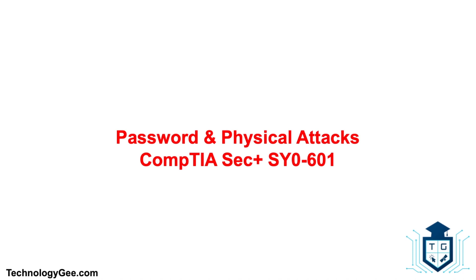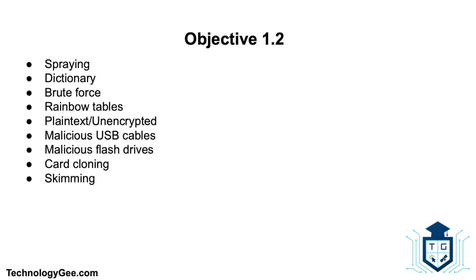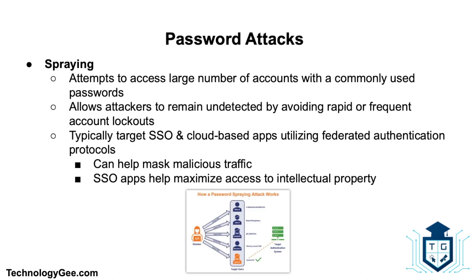What's up everybody, this is your boy Tech G, back with another video to help you successfully pass the CompTIA Security Plus 601 certification. In this video you're going to learn about password attacks and physical attacks such as spraying attacks, dictionary attacks, brute force attacks, rainbow tables, plain text unencrypted attacks, malicious USB cables, malicious flash drives, card cloning, and skimming.